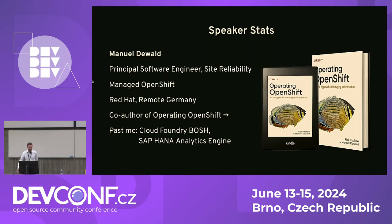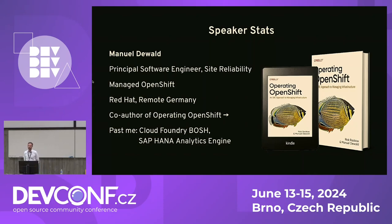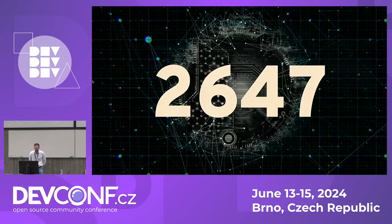What do you think — how many metrics does a single OpenShift cluster expose today? When you create a new managed OpenShift cluster, how many metrics do you have in the Prometheus instance? Who believes there are more than 500? More than 1,000? More than 2,000? More than 3,000? The answer is 2,647 metrics are exposed in the cluster I created this week for the demo.